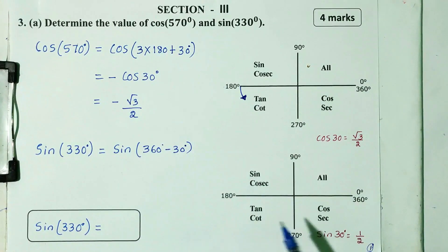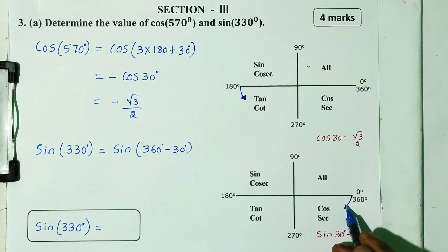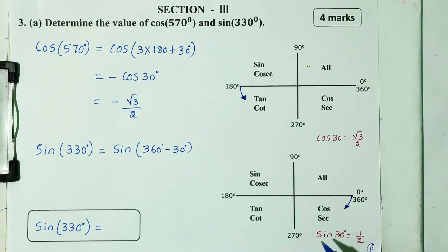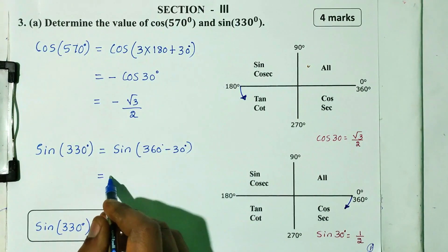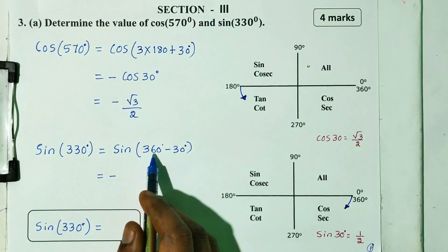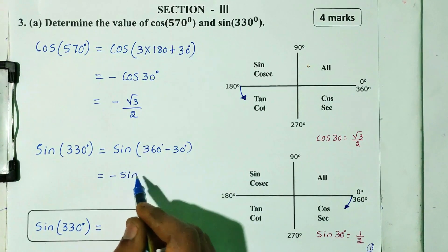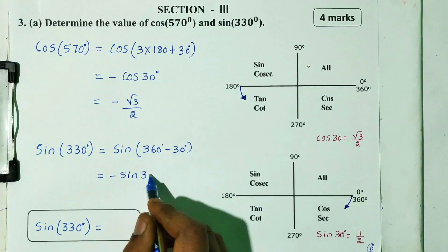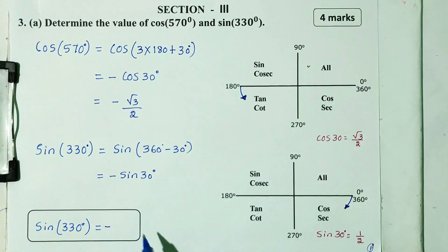First, sin is equal to 360 minus, which gives the direction. This is the fourth quadrant. Cos to sec is equal to negative. Sin is equal to negative. So, 360 minus sin 30 equals minus sin 30, which is equal to the value of 1 by 2.